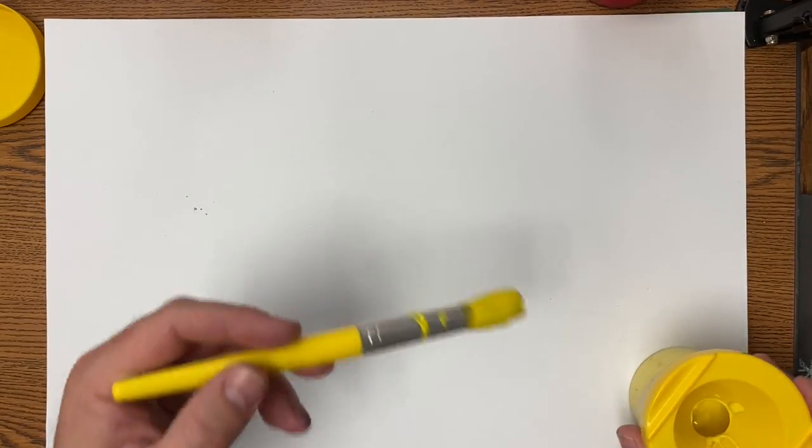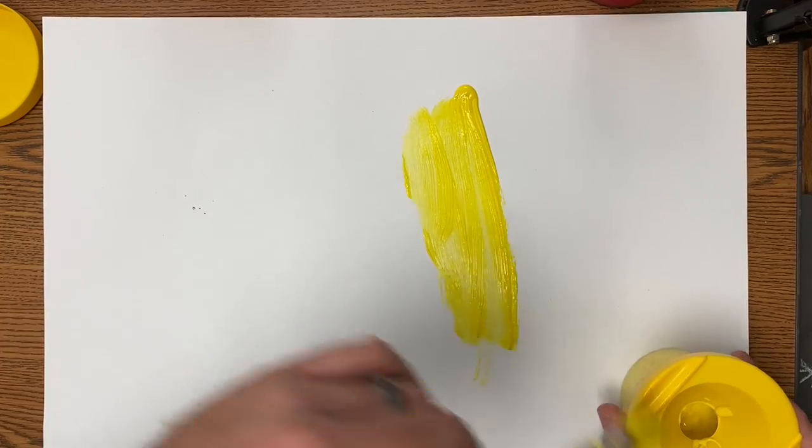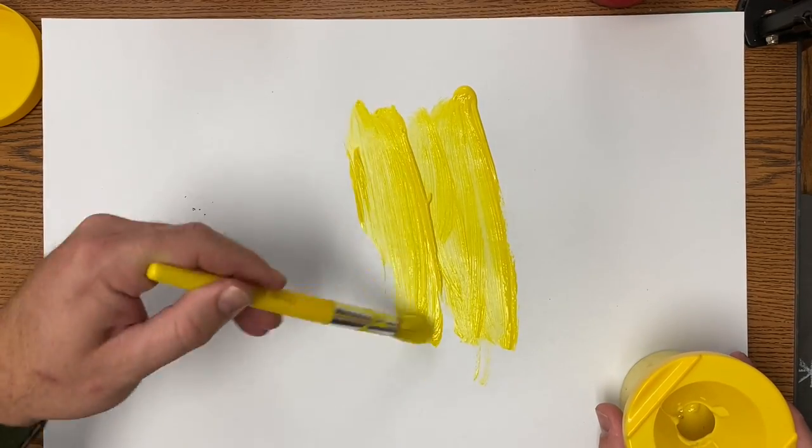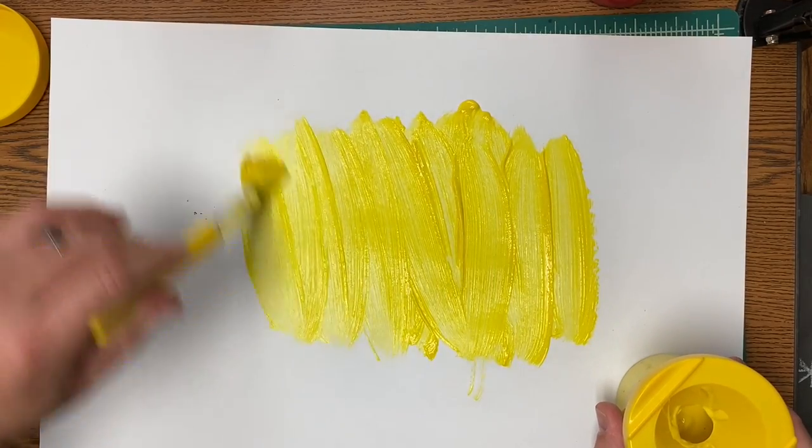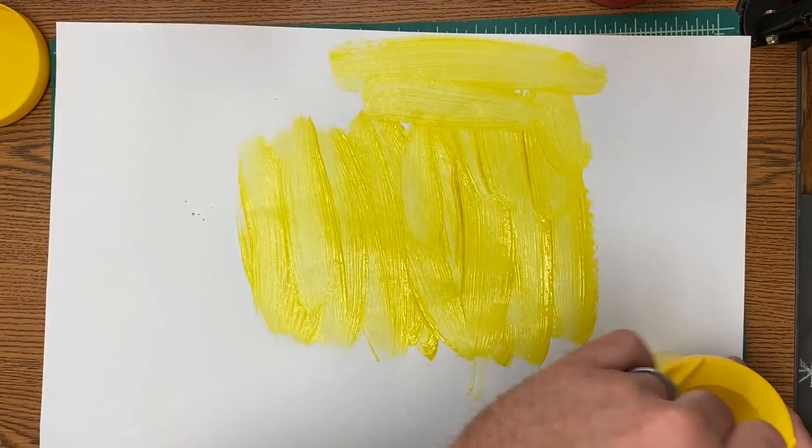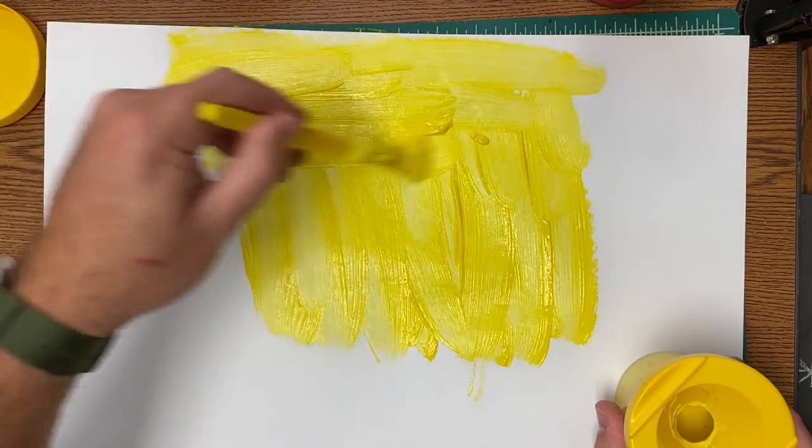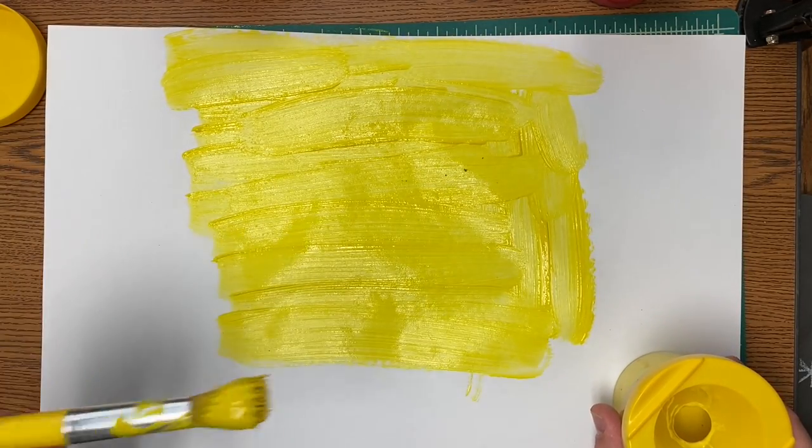I'm going to start with the lightest color, which is yellow. You want to fill the page up with yellow. You don't have to do it in this order—you can paint yours orange first and then add some yellow and red to it—but I'm going to show you how to make orange.